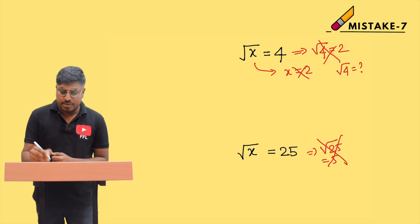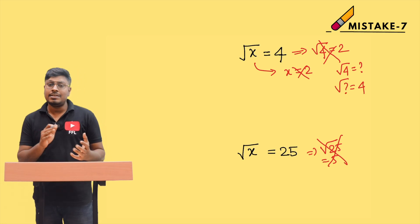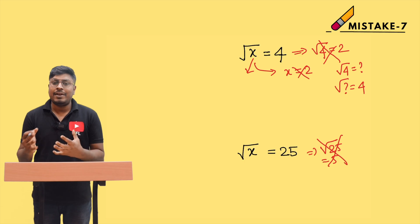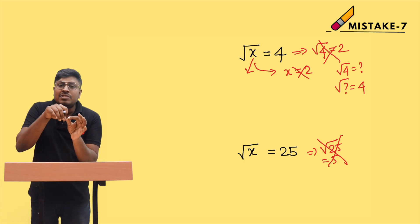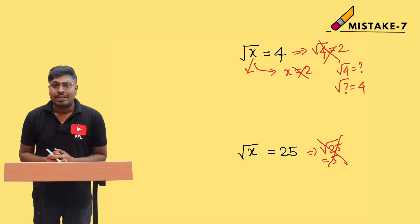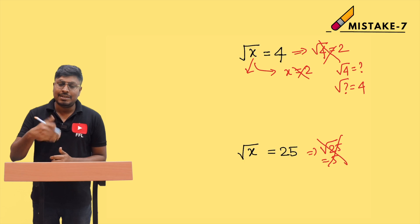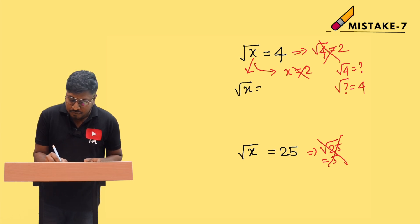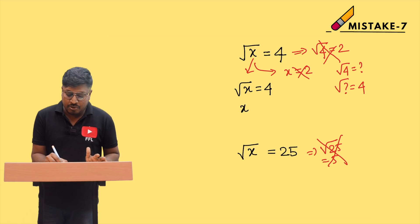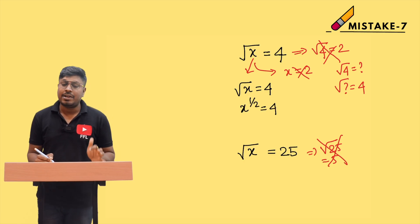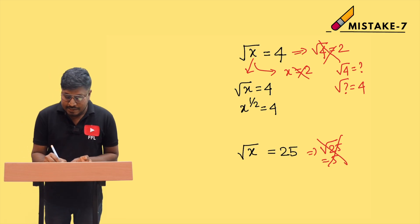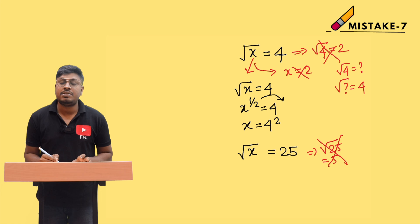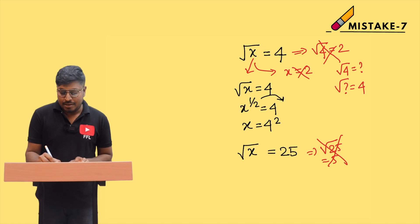There is a difference between finding the square root of 4 versus finding x such that the square root of x equals 4. Our target is to find x so that when we take the square root of x, the result is 4. The easy method: remove the square root — it can be written as x to the power 1/2. Bringing the 1/2 to the right-hand side, it becomes a square: x equals 4 squared.